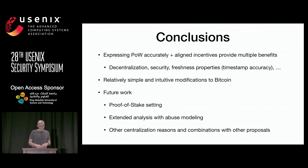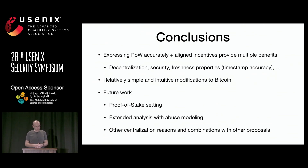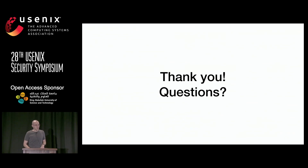In conclusion, expressing proof of work more accurately with aligned incentives provides multiple benefits: better decentralization, improved security, and other improvements such as timestamp accuracy — details are in the paper. The changes are relatively simple to apply to Bitcoin. For future work we are extending the approach to proof-of-stake settings and conducting extended abuse modeling analyses of other systems and their combinations with Strong Chain.